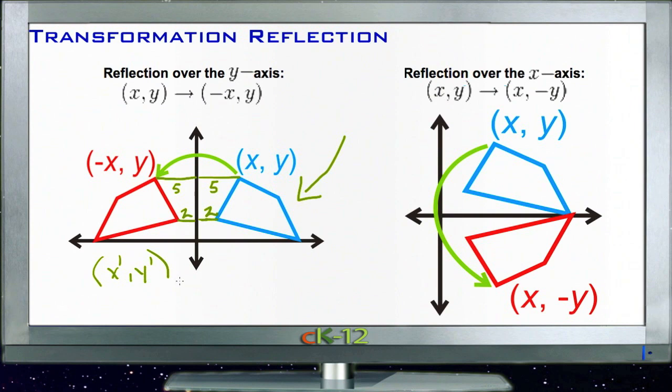The shorthand for that is taking each point with coordinates (x, y) and making the x-coordinate negative while not changing the y-coordinate. For instance, if this point is (2, 2), then the new point would be (-2, 2).